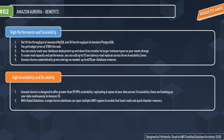The first benefit is high performance and scalability. You get up to five times the throughput of standard MySQL and three times the throughput of standard PostgreSQL databases at about one tenth the cost. You can easily scale your deployment up and down, add up to 15 low-latency read replicas across three availability zones, and Aurora automatically grows your storage up to 64 terabytes per database instance.